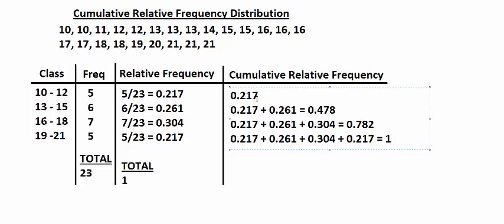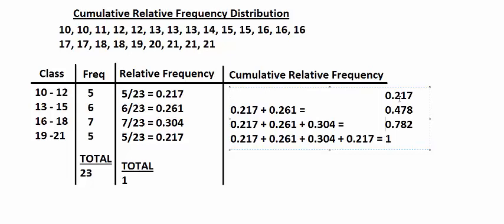Lining this up now, our cumulative relative frequency distribution labels the first class at 0.217, or 21.7% — meaning 21.7% of the data is in the first class. The second class is labeled 0.478, or 47.8% — roughly half of the data is in the first two classes. The third class is labeled 0.782, so 78.2% of the data is in the third or previous classes. The last class is labeled 1, for 100% — 100% of the data is in the data set.